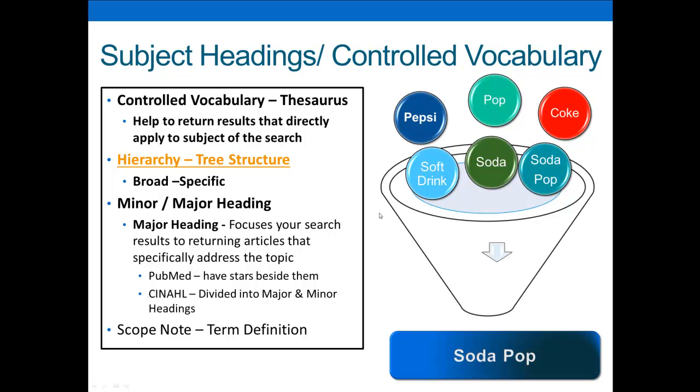One of the nice things about using subject headings is the fact that you get away from some of the issues you have when doing a keyword search. No matter how you want to describe a topic, like say Soda Pop as you can see over here on the right, the controlled vocabulary is going to force everyone to use the same word. Because the controlled vocabulary is an established set of words that are used to categorize or tell you what an article is about. There may be six different ways to say Soda Pop, and depending on where you're from, you may be familiar with all or just a very few of these terms.